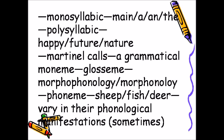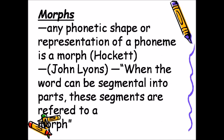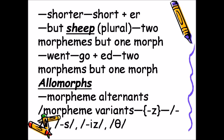Martinet calls a morpheme a grammatical monim, glosseme, or morphophoneme. Phoneme examples: sheep, fish, deer — these vary in their phonological manifestations. A morph is any phonetic shape or representation of a morpheme. When a word can be segmented into parts, these segments are referred to as morphs. For example: 'sheep' plural — two morphemes but one morph; 'went' (go + -ed) — two morphemes but one morph.